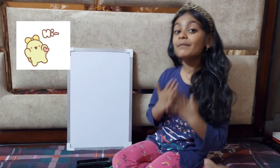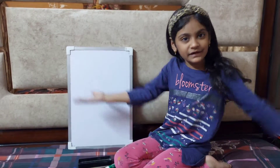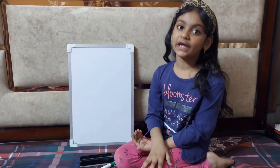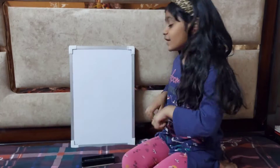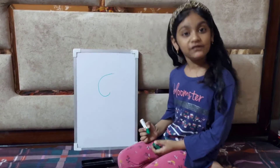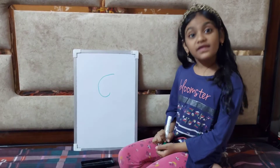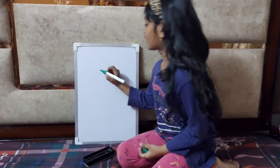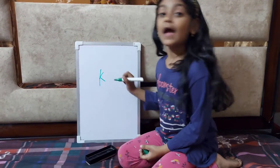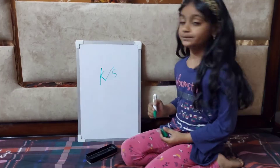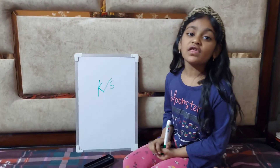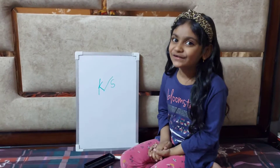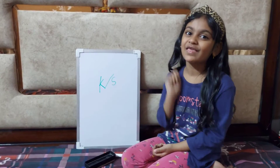Hey everyone, welcome back to Diva Ki Danya. My name is Deva. I hope you all are doing great. So guys, today I am going to tell you all one rule about the English language. There is a letter C in the alphabet, and C has two sounds: Ka and Sa. Most of us get confused when to pronounce Ka and when to pronounce Sa. So today I am going to tell you all the trick for that. So let's start.